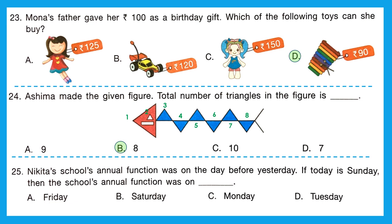Question 25: Nikita's school's annual function was the day before yesterday. If today is Sunday, then yesterday was Saturday, and the day before Saturday was Friday. So the school's annual function was on Friday. The correct option is option A, Friday.